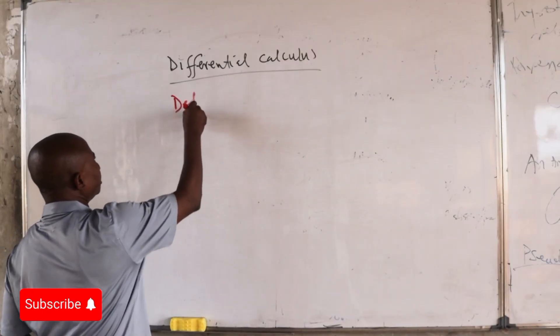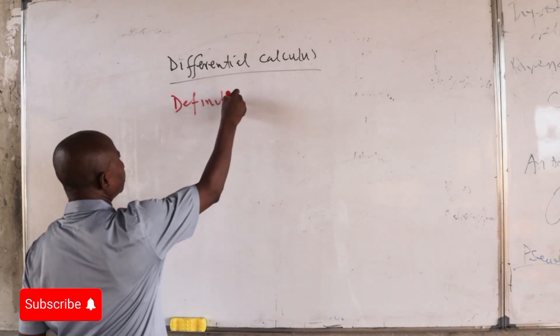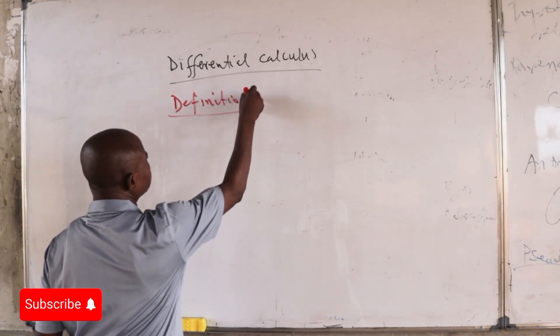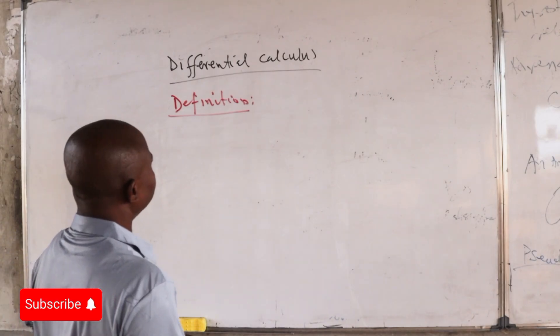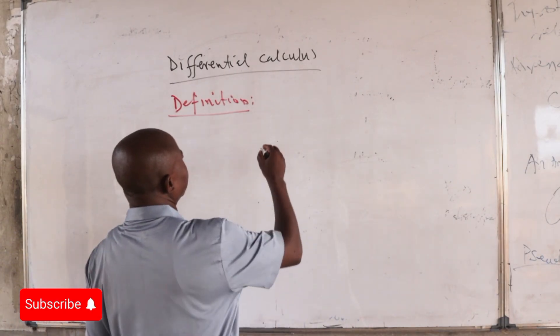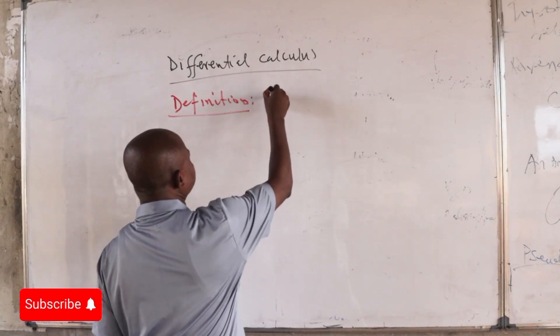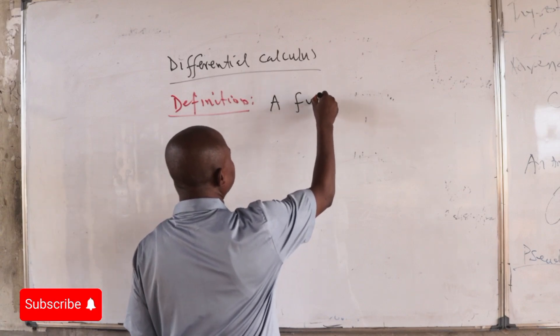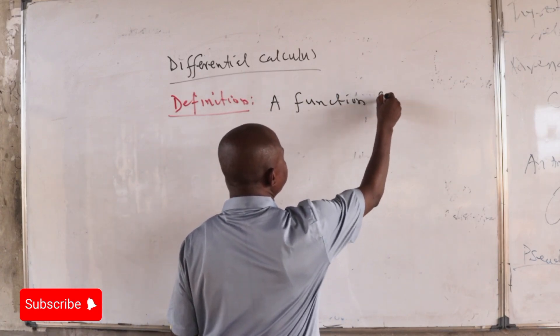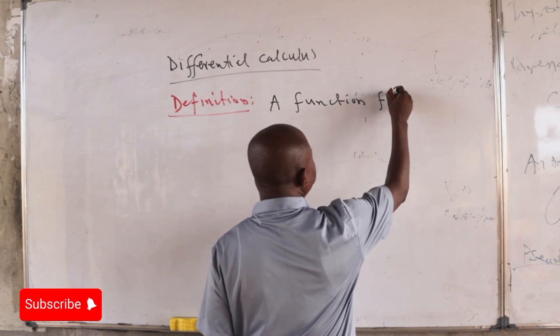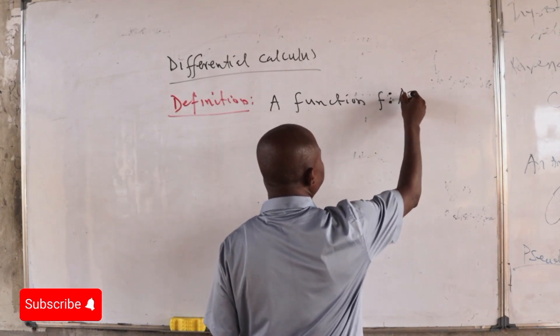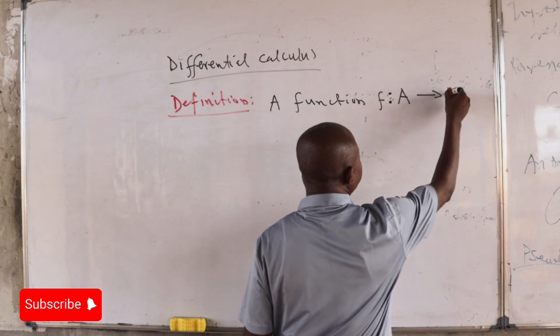Definition: A function F from A into B, defined on a set A into another set B...